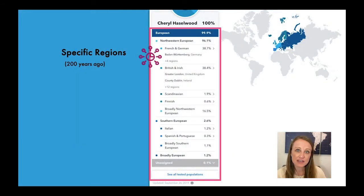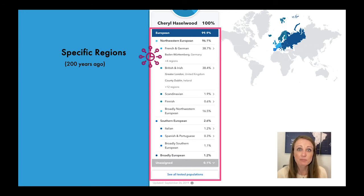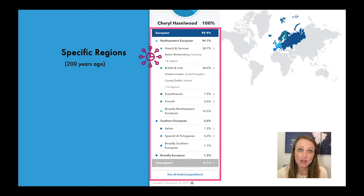Looking again at these ethnicity results, there are three different categories of regions — but the specific regions are the most valuable if you're trying to do genealogy.